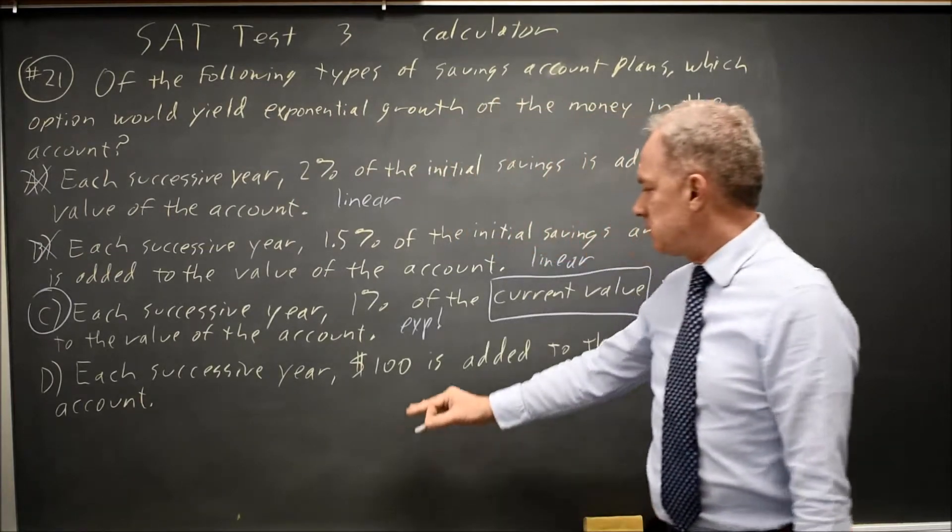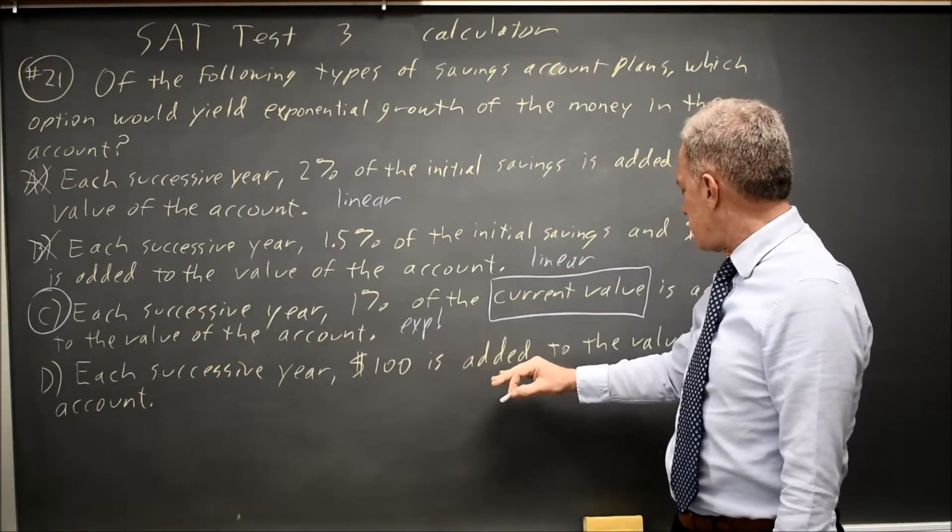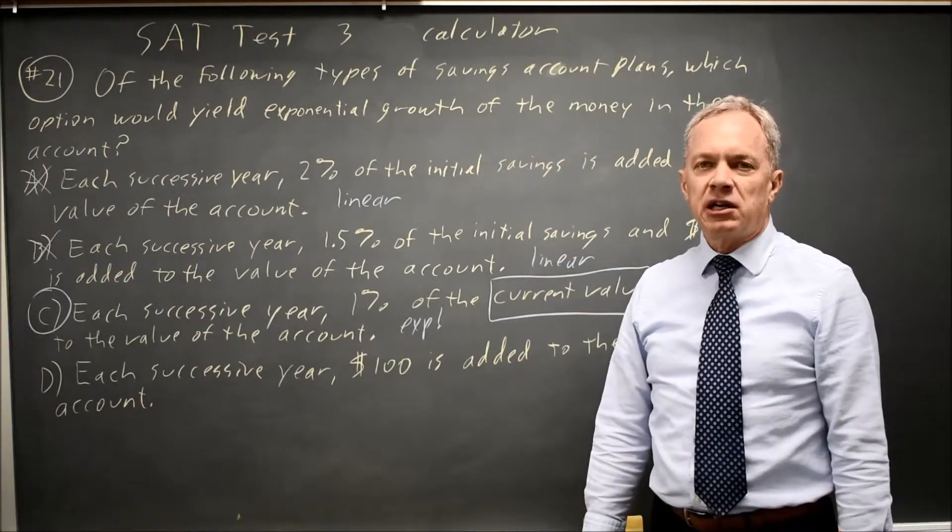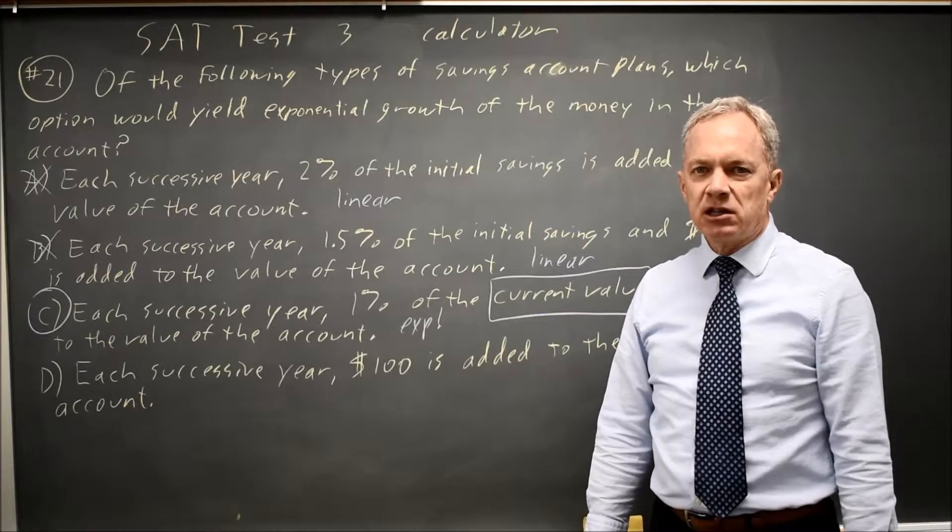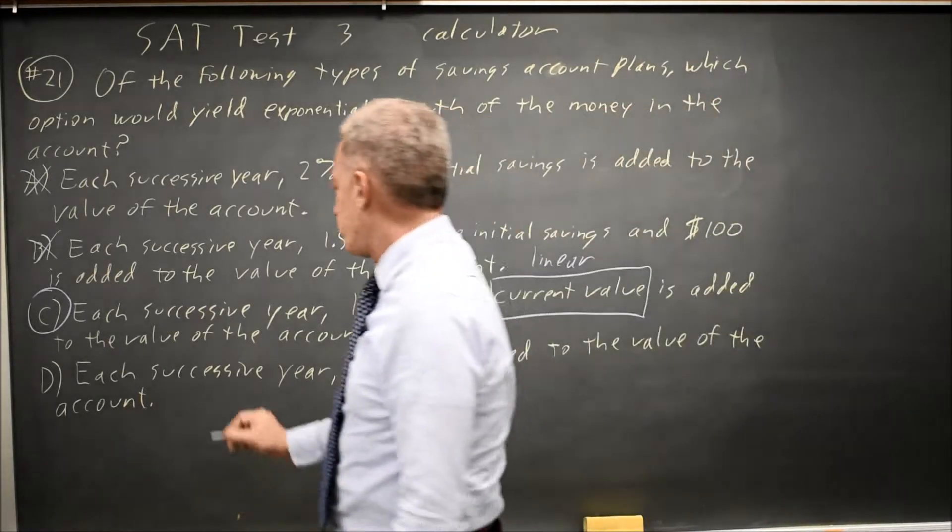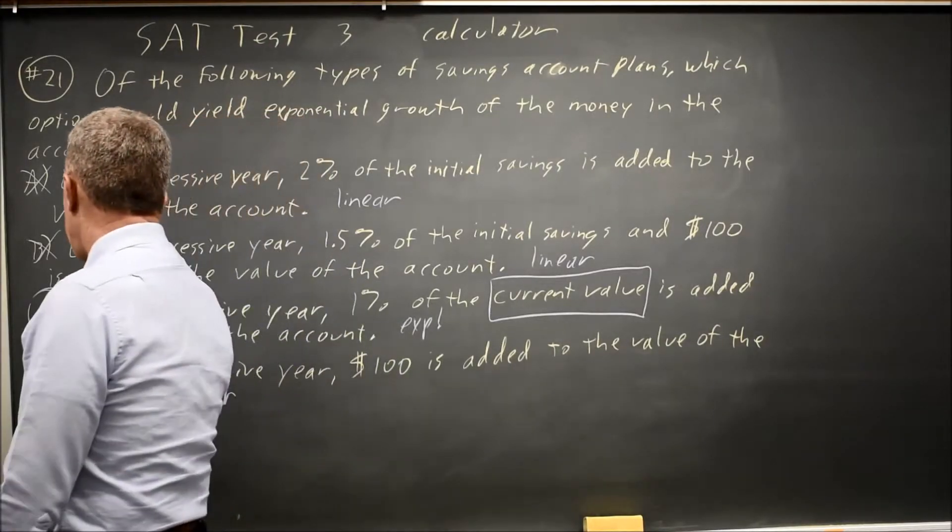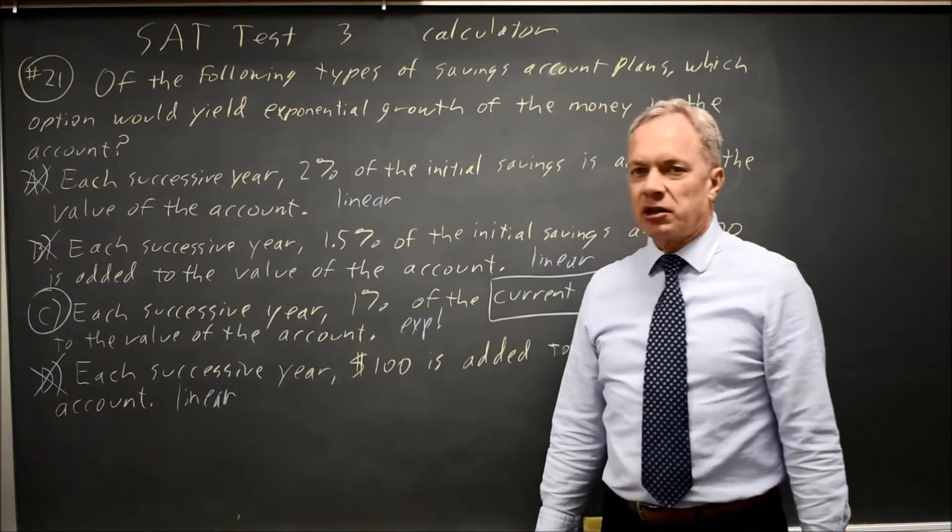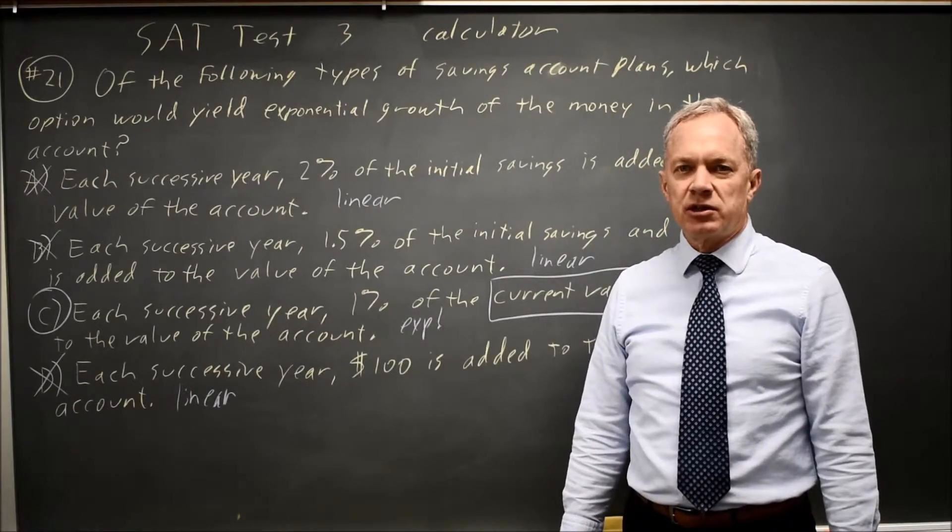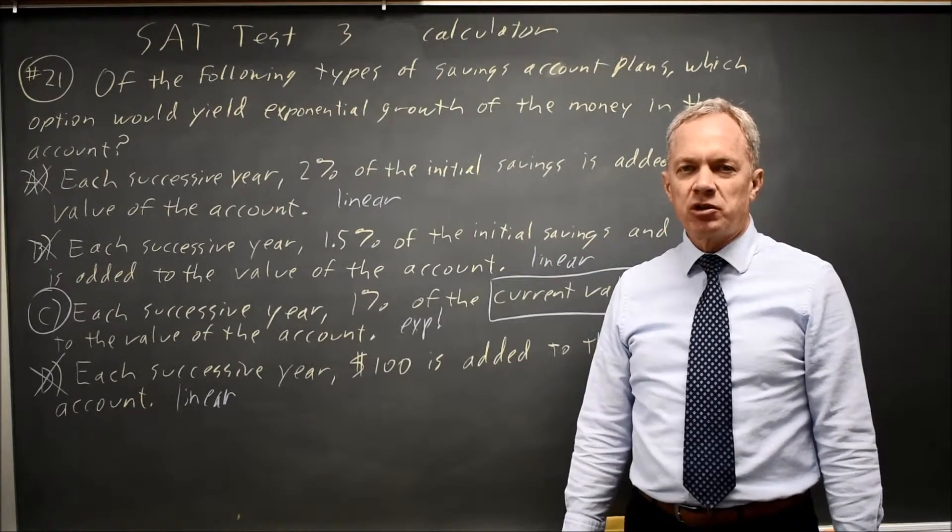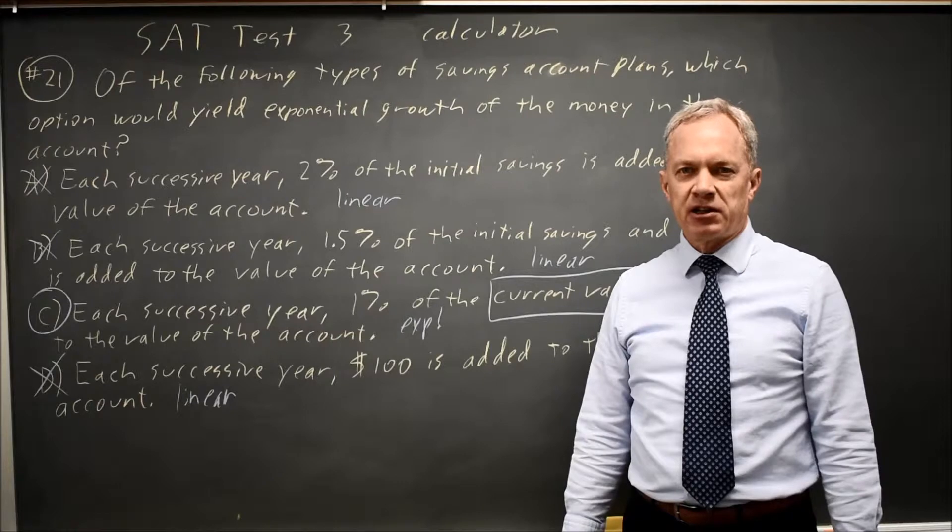And choice D, each successive year, $100 is added to the value of the account. Again, we're adding a fixed amount each year. That makes this linear growth. And College Board asked for exponential, so linear would not be correct. The only exponential growth is choice C, where we multiply by a constant rather than adding a constant.